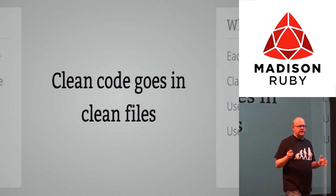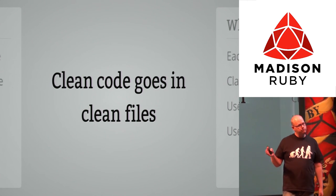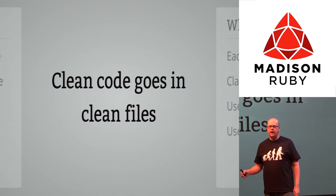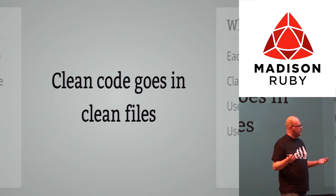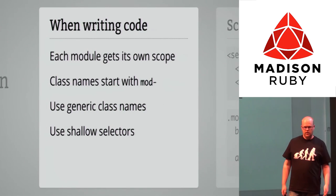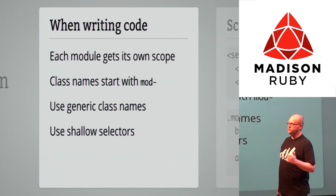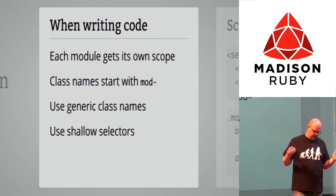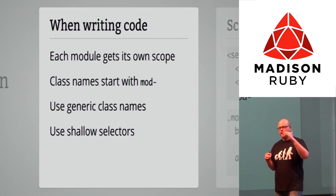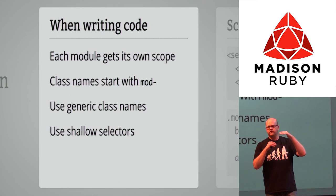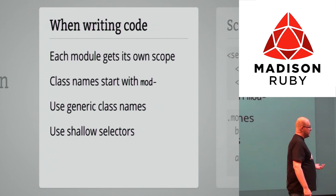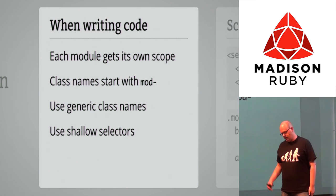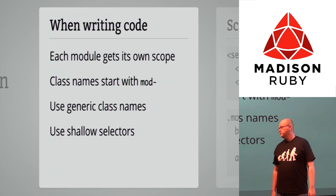Clean code goes in clean files. Make sure new code goes into a new file so you know that in the end your old CSS files are completely empty and can be thrown away. Everything in the new files is clean. When writing code, I give each module its own scope — I start class names with mod-dash so I know it's a module. When you see mod-dash in HTML, you know from that point to where the element closes it's a single module. Use generic class names — if you're showing the latest article, don't call the module 'news' because later you may show old articles there and the class name won't make sense.